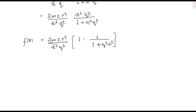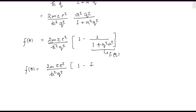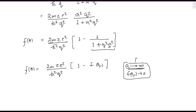The quantity 1/(1 + q²·a²) is called F(q), the atomic form factor. So f(θ) = 2m·Z·e² divided by ℏ²·q², times (1 − F(q)). For pure Coulomb scattering, a tends to infinity, and as a → ∞, F(q) tends to zero. This is the limiting case corresponding to the pure Coulomb potential.